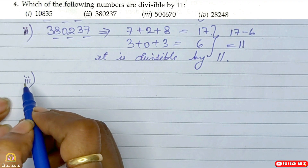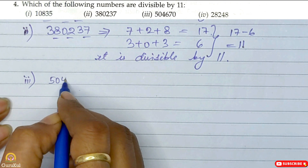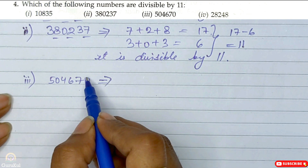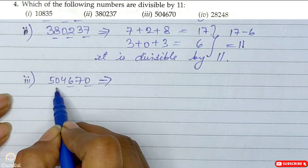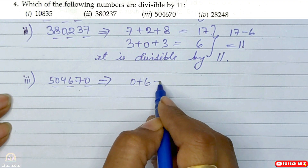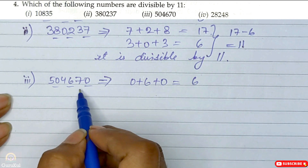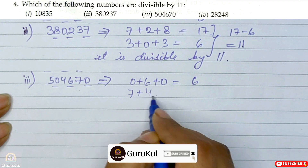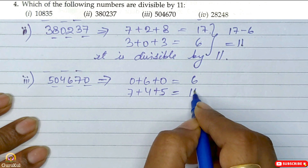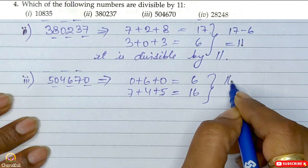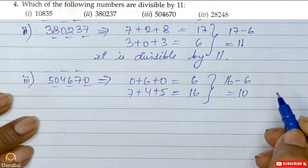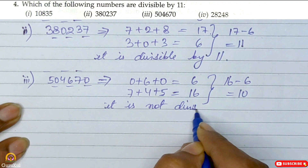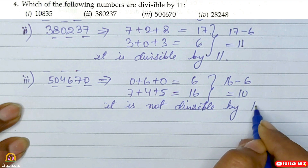Third one: the number is 5, 0, 4, 6, 7, 0 — that is 504670. Starting from the unit place, the odd-place digits are 0, 6, and 0. So 0 plus 6 plus 0 gives us 6. Starting from the even place, it is 7 plus 4 plus 5, which gives us 16. The difference is 16 minus 6, which is 10. So this number is not divisible by 11.